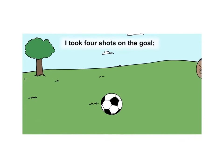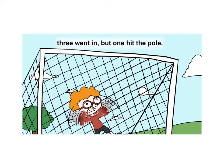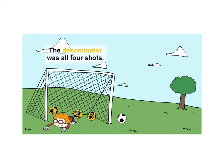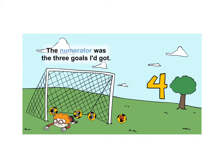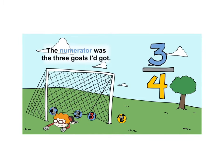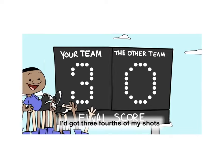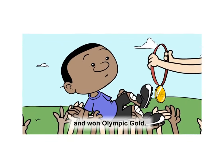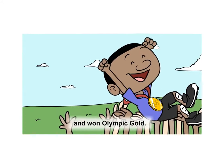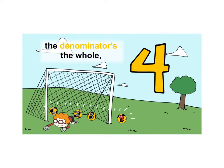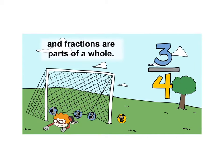I took four shots on the goal — three went in, but one hit the pole. The denominator's the whole; the denominator was all four shots. The numerator was the three goals I got. The other team's record had taken a toll — got three-fourths of their shots and one Olympic goal. The numerator's the part, the denominator's the whole. The whole is the whole. The fractions are parts available.